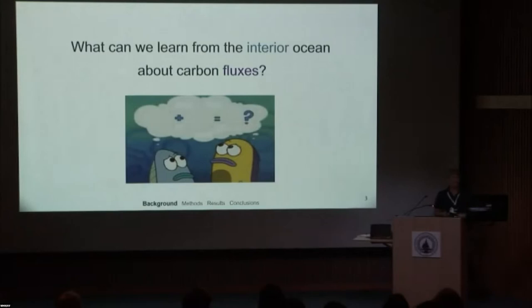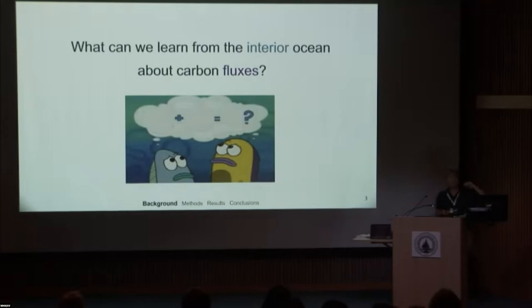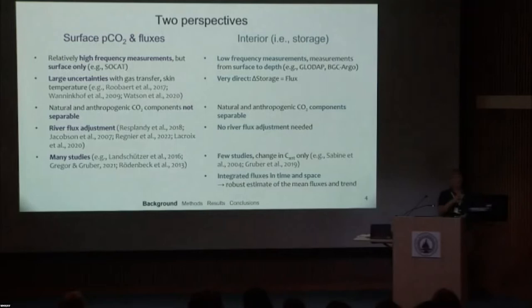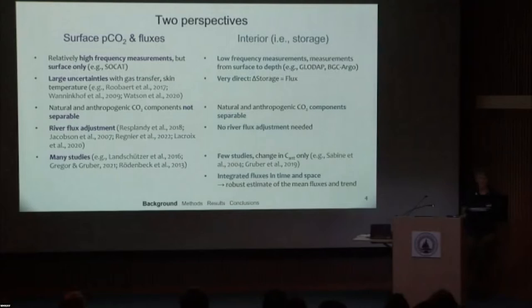What we wanted to know is whether we can constrain the ocean carbon sink from interior observations. What can we learn about ocean carbon fluxes from the interior ocean? Rather than measuring carbon going in and out at the surface and from rivers, we look at how much carbon is accumulating in the global ocean and measure that directly, then compare it to the fluxes. So we have two perspectives: the surface and the interior — each with its own pros and cons.